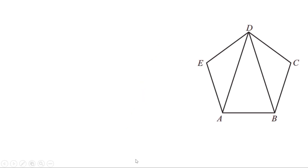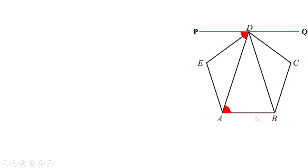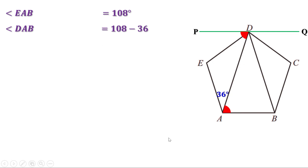Coming back to the figure: PQ is parallel to AB, so AB and PQ are a pair of parallel lines. The line AD is intersecting them, so the alternate angles are equal. Angle EAB is an angle in the regular pentagon, therefore it equals 108 degrees. We have already seen that angle EAD is 36 degrees. Therefore, angle DAB equals 108 minus 36, or 72 degrees. Since these alternate angles are equal, angle PDA is also equal to 72 degrees.